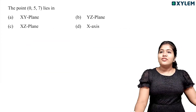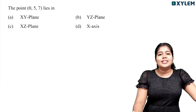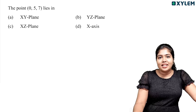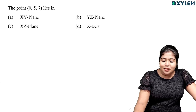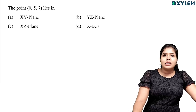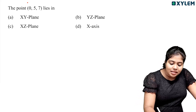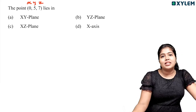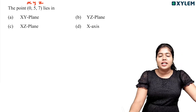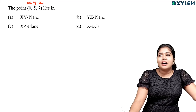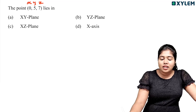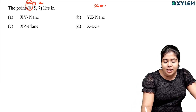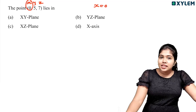So the first question: the point (0, 5, 7) lies in which plane? The main thing is that 3D coordinates are x, y, and z. In this point, the first coordinate, x, is 0. So x is 0.